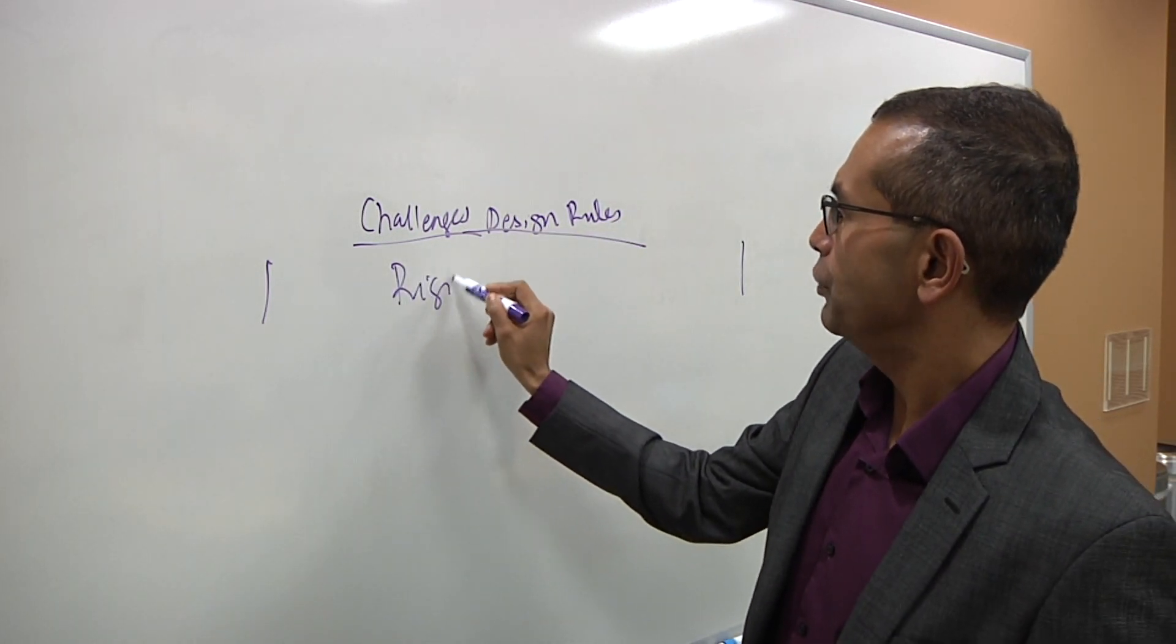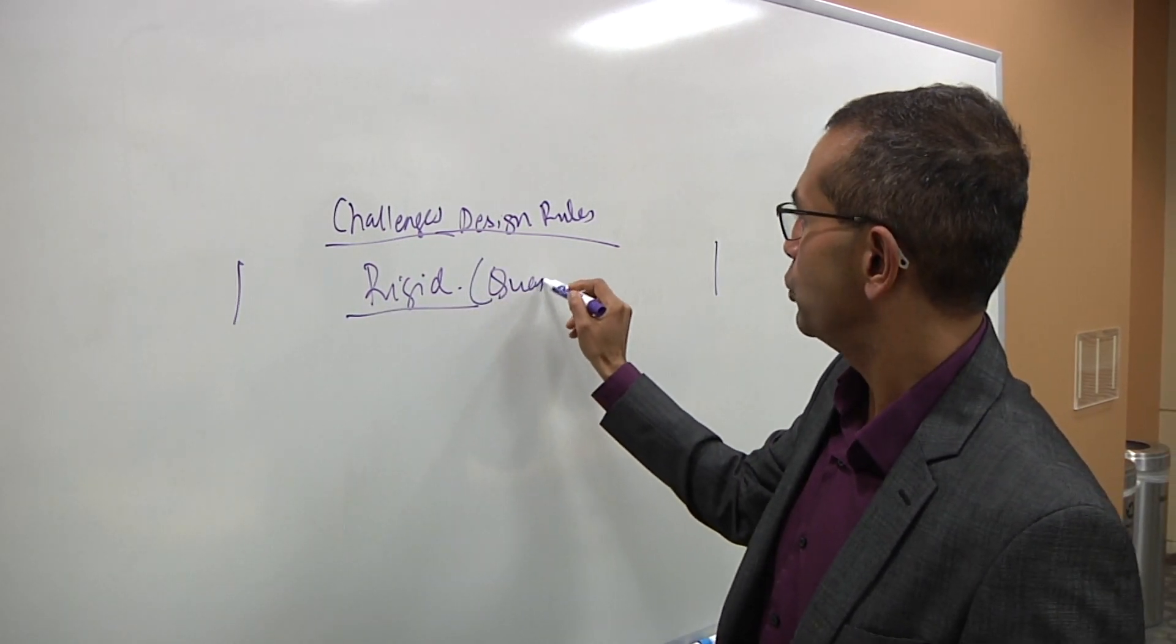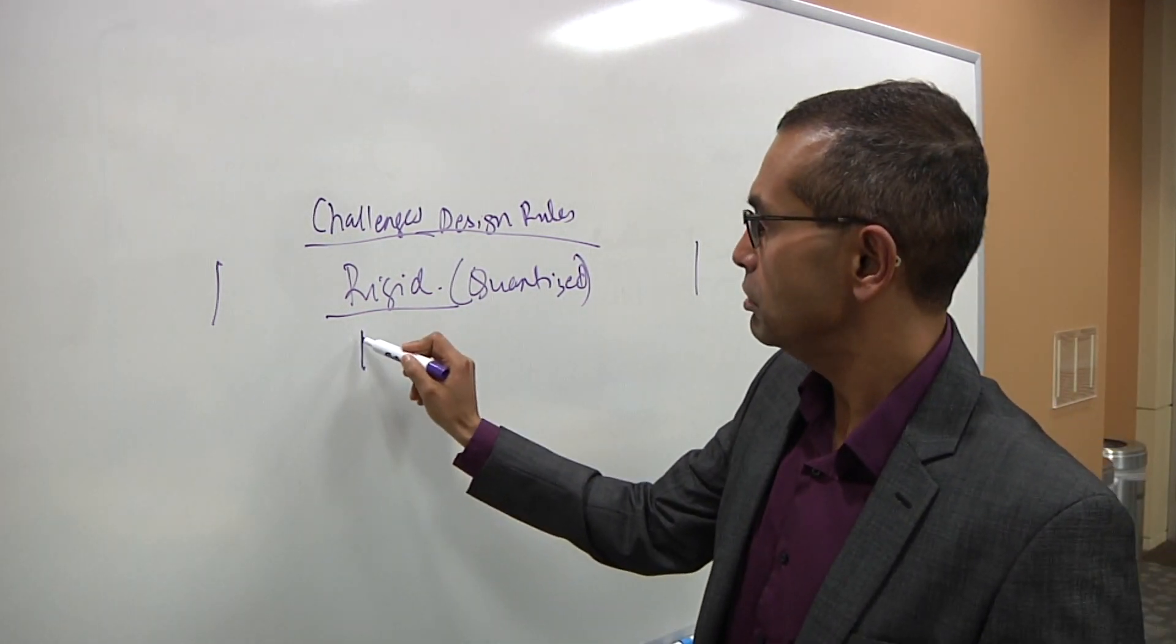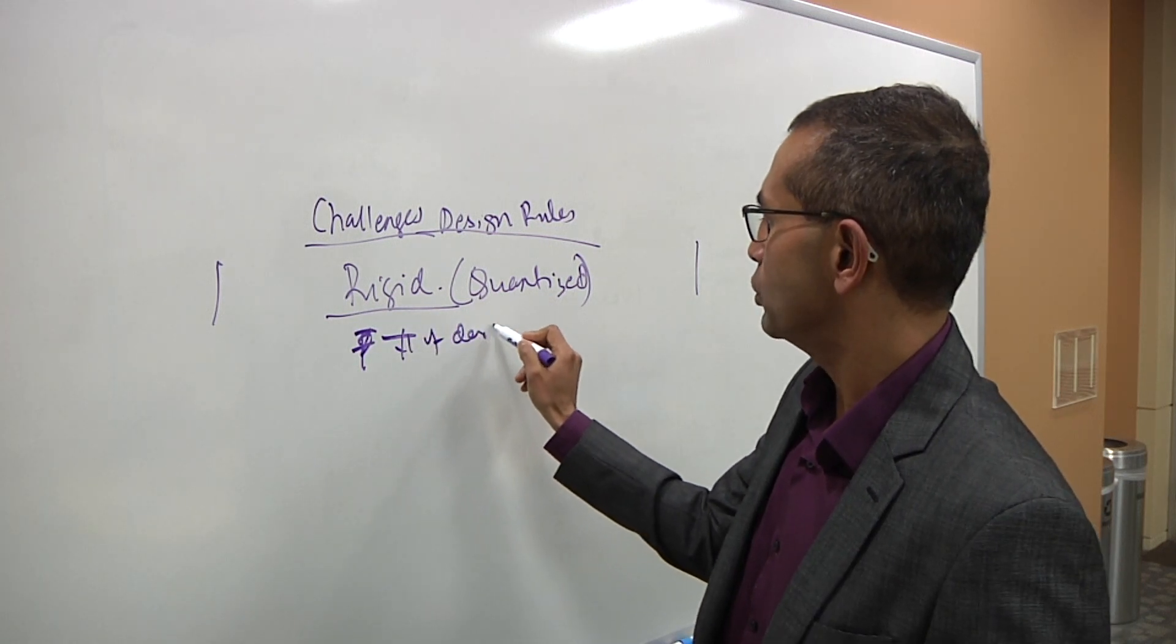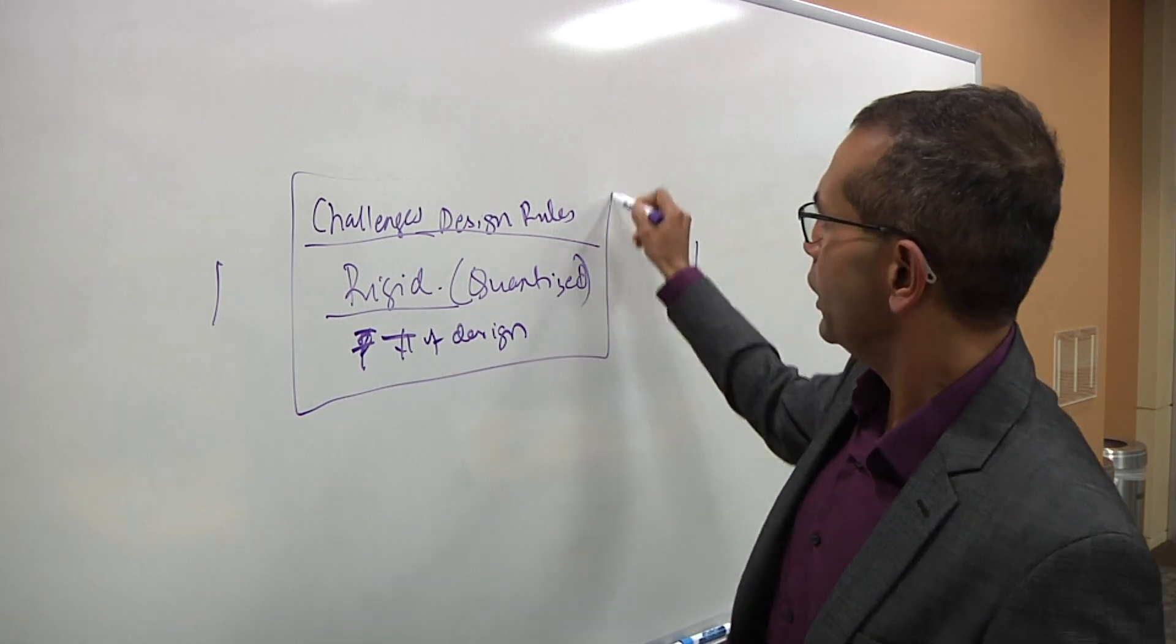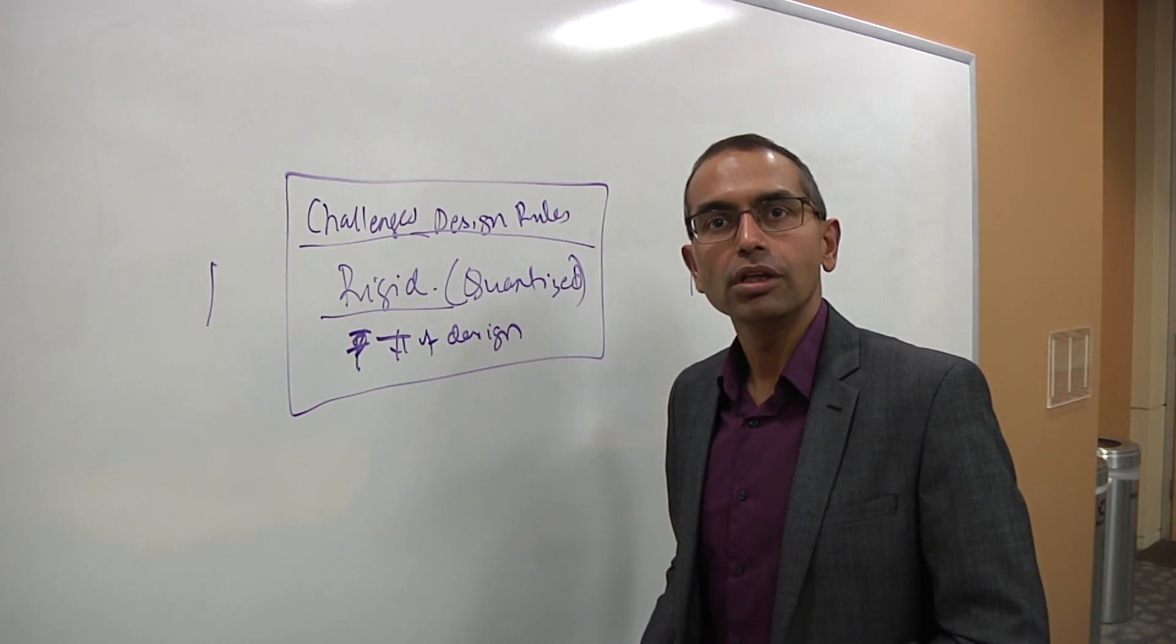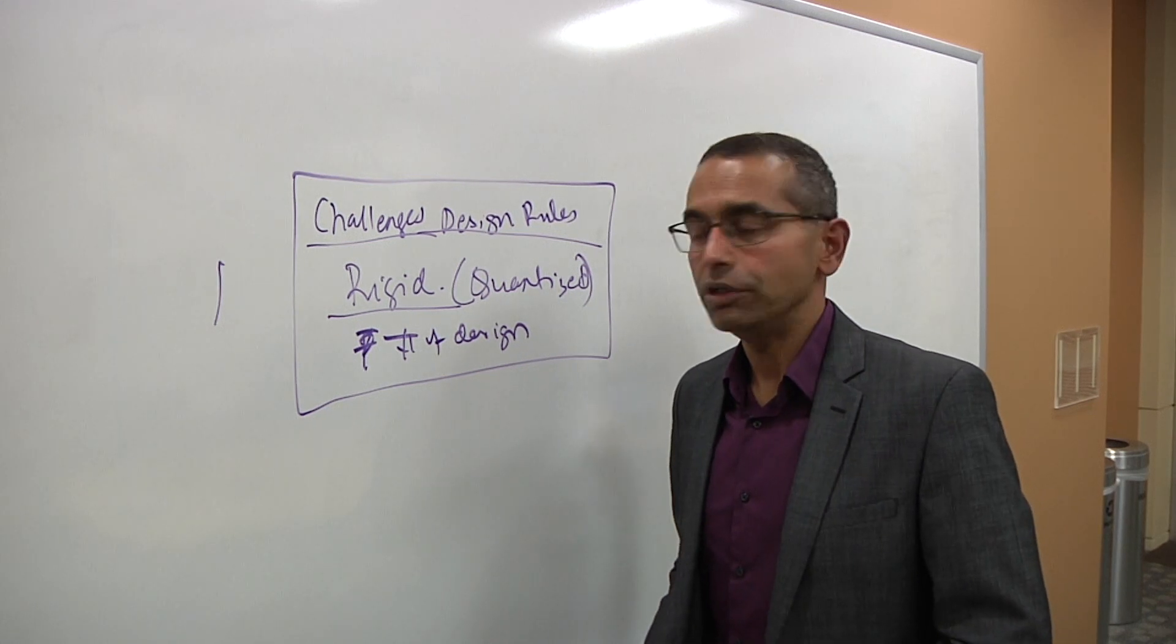The design rules are very rigid. They're quantized in many different ways. You can't really design for any length and width, and the sheer number of design rules that you have to grapple with is mind-boggling. That itself introduces a lot of challenges for our customers and layout designers as they start to use 16 or 7 or even looking forward to 5 nanometers.